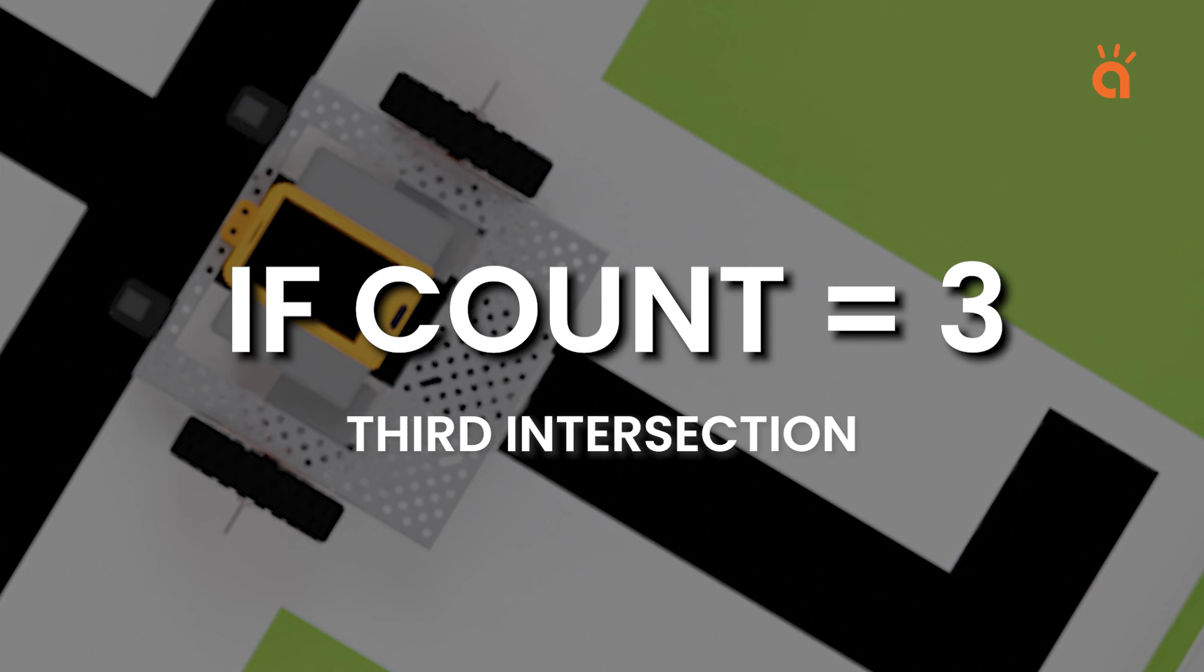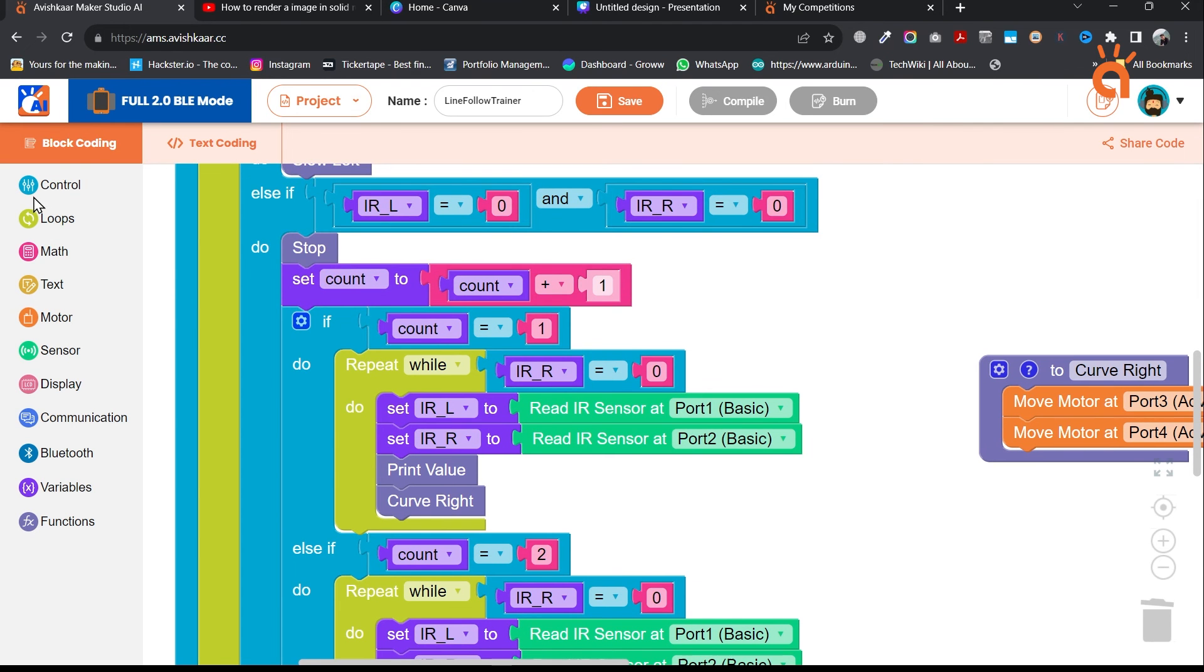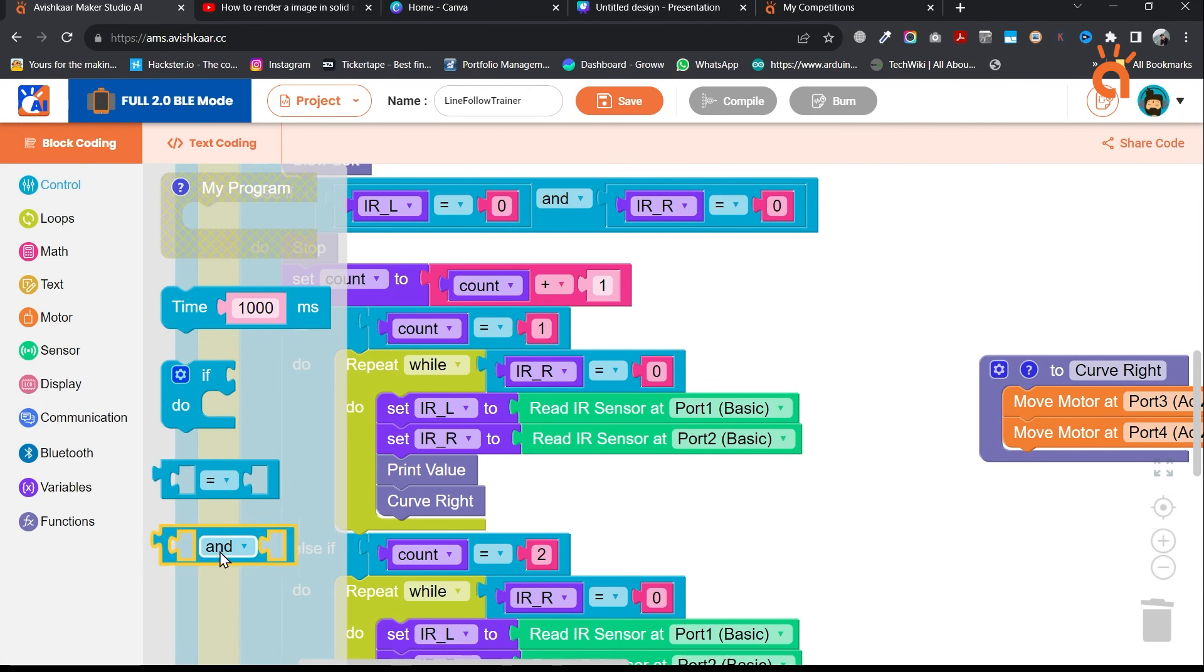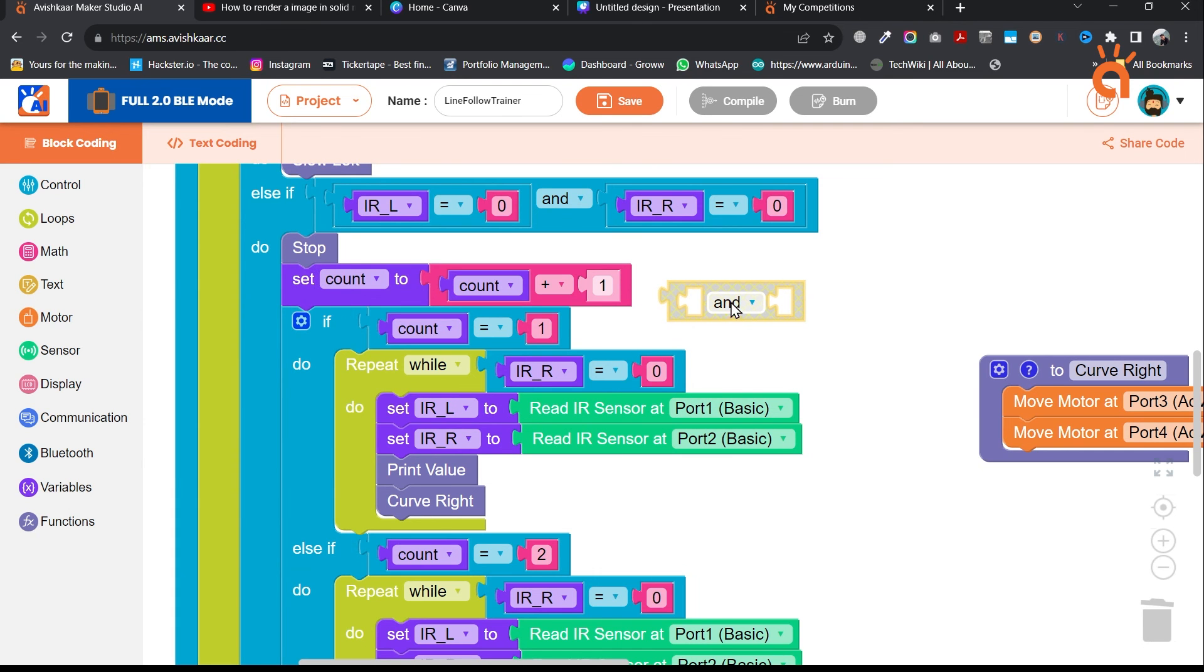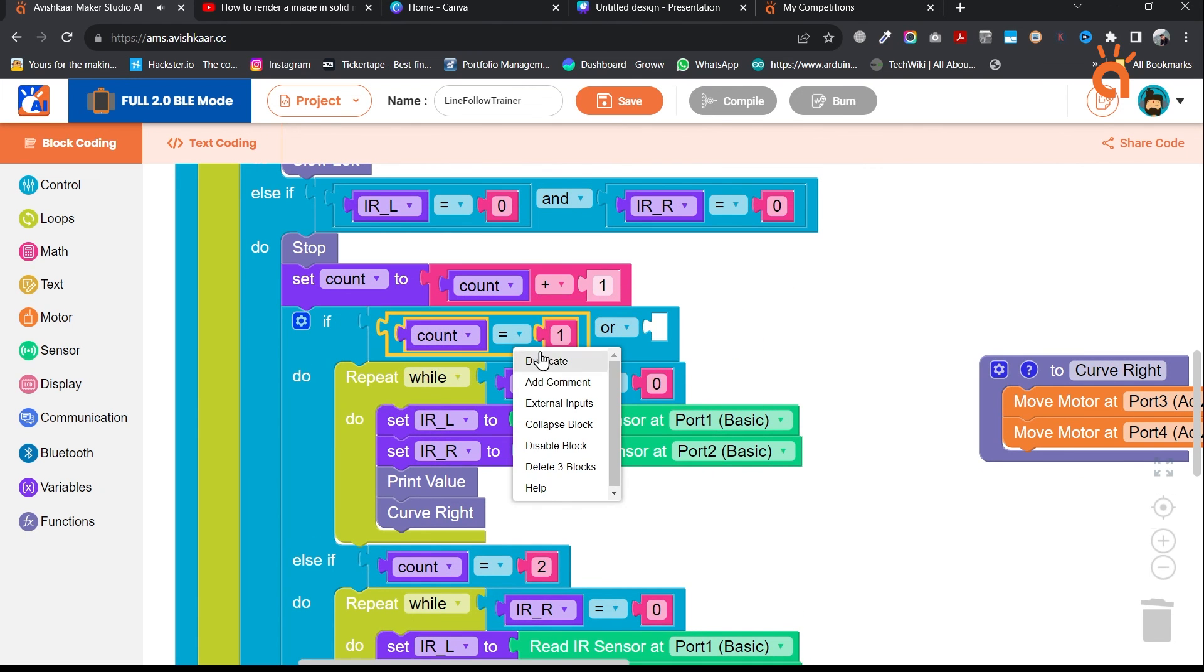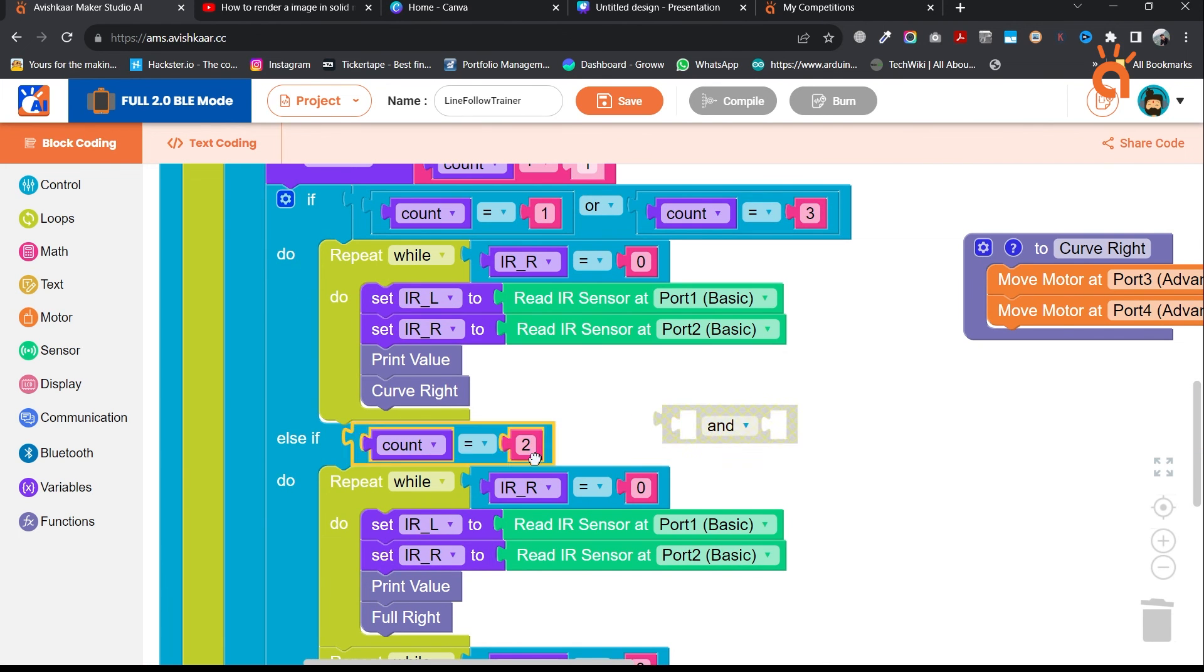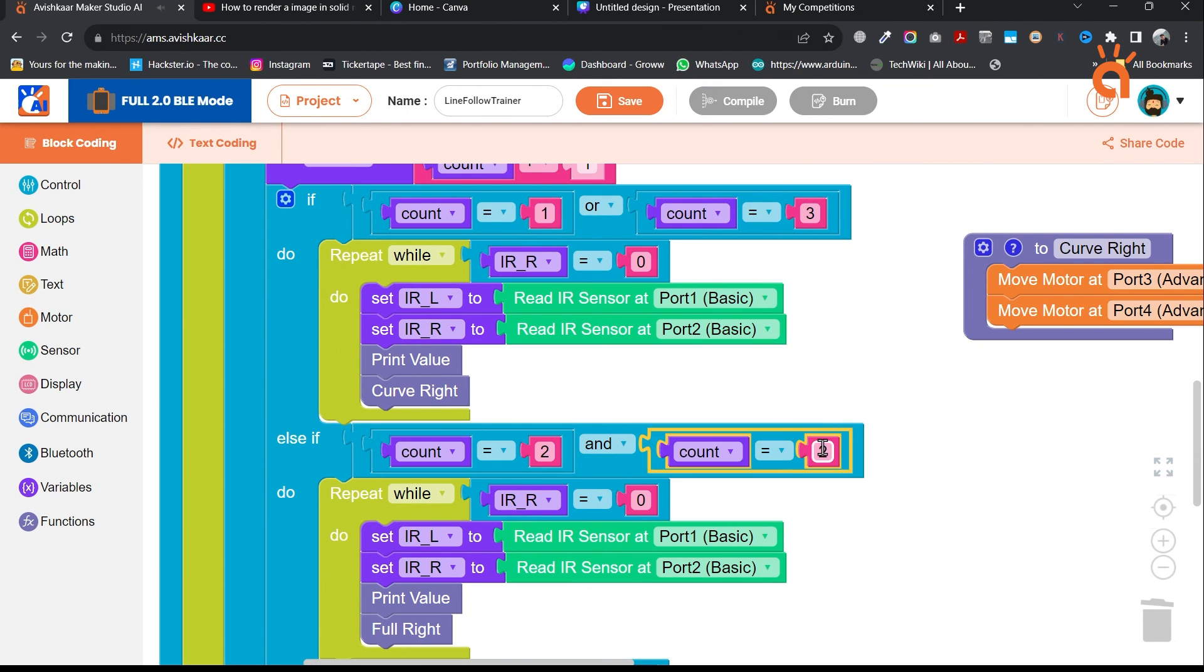If count is equal to 3. This next intersection is very similar to the first intersection. We will have to rotate our robot 90 degrees in right direction. So we will not create a newer condition. Instead, we will modify our first condition. Now if count is equal to 1 or count is equal to 3, the robot will take a 90 degree turn. Similarly, for count is equal to 2 or count is equal to 4, the robot will rotate 180 degree.